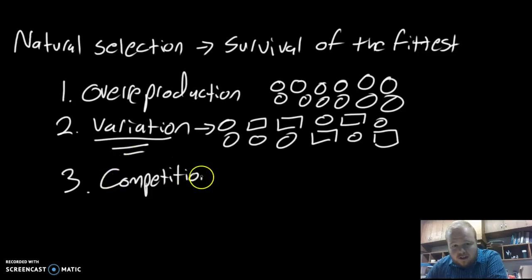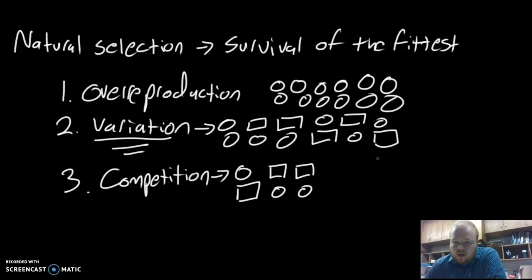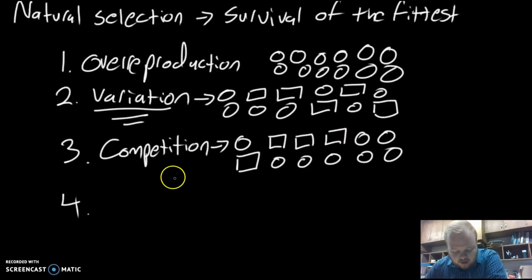Once you have overreproduction and variation within the population, you're going to result in competition, where organisms fight for survival. This ties into Malthus's idea. Organisms fight when food and resources become scarce. Resources can be a variety of different things—not just food and water, but reproductive mates, habitat, or not being eaten by predators. Pressure causes competition to ramp up and target certain individuals. The squares are slowly fading out over time.